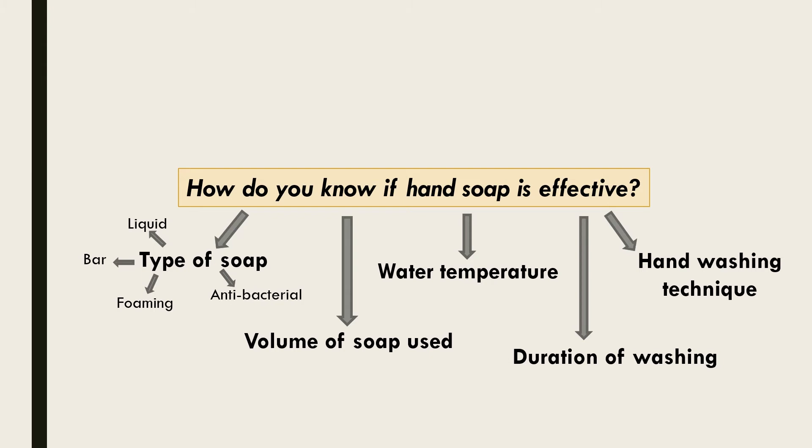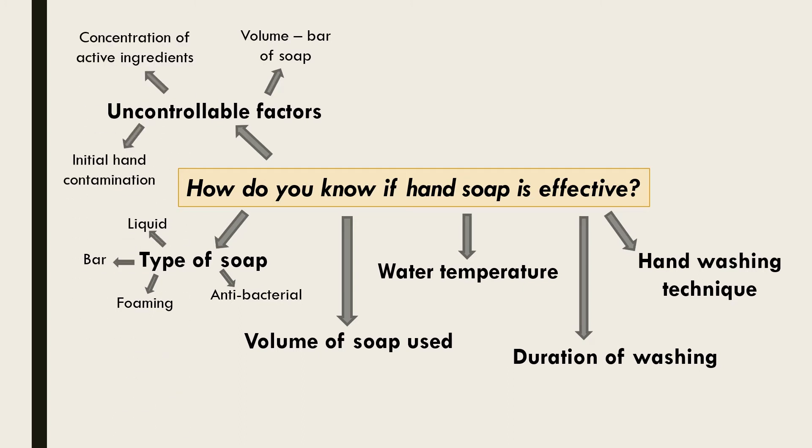Next we need to consider factors that may influence the effectiveness of hand soap that are unable to be controlled. For example, if a bar of soap is chosen, how can you control the volume or amount used? The concentration of active ingredient may also vary, as well as how contaminated each individual's hands are prior to washing.